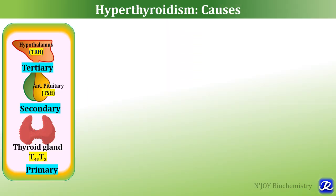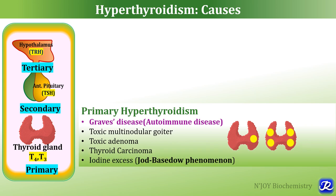Primary hyperthyroidism results from dysfunction of the thyroid gland, where the pathology is in the gland itself. The most common cause is Graves disease, an autoimmune disease. Other causes include toxic multinodular goiter, toxic adenoma, thyroid carcinoma, or iodine excess — the latter is called the Jod-Basedow phenomenon. Primary hyperthyroidism is characterized by increased T3 and T4, and because of negative feedback, TSH level is low.